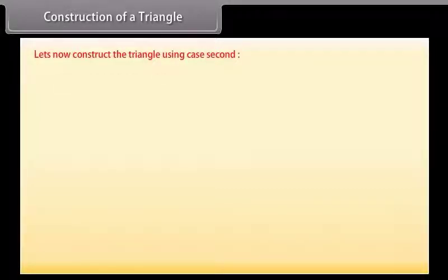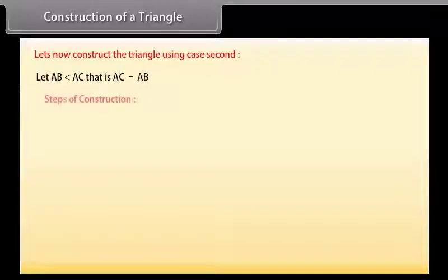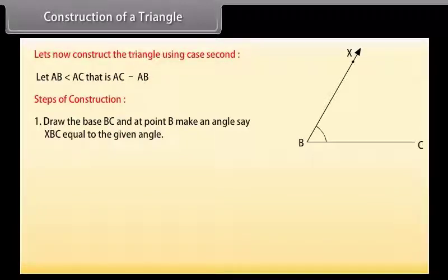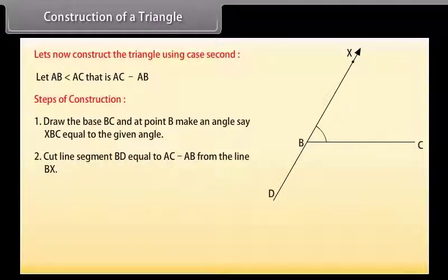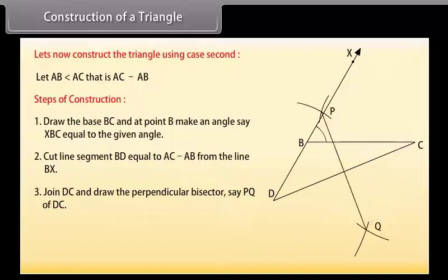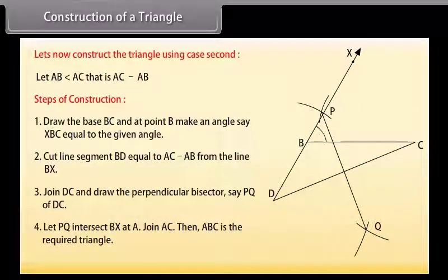Case 2, when AB is less than AC, that is AC minus AB is given. Draw the base BC and at point B make an angle XBC equal to the given angle. Cut line segment BD equal to AC minus AB from the line BX. Join DC and draw the perpendicular bisector PQ of DC. Let PQ intersect BX at A. Join AC. Then ABC is the required triangle.